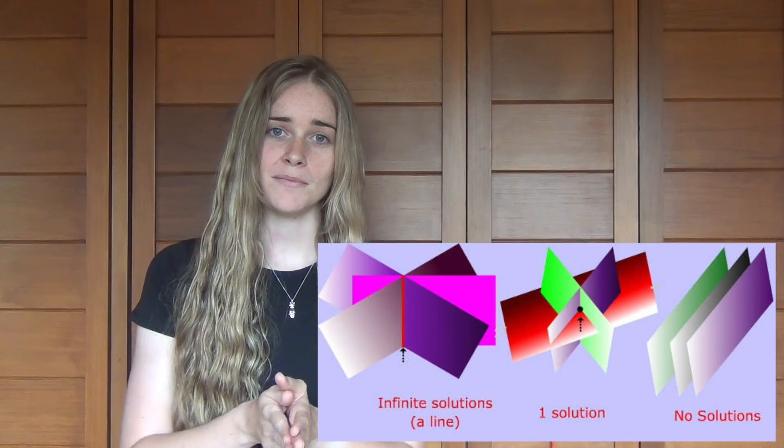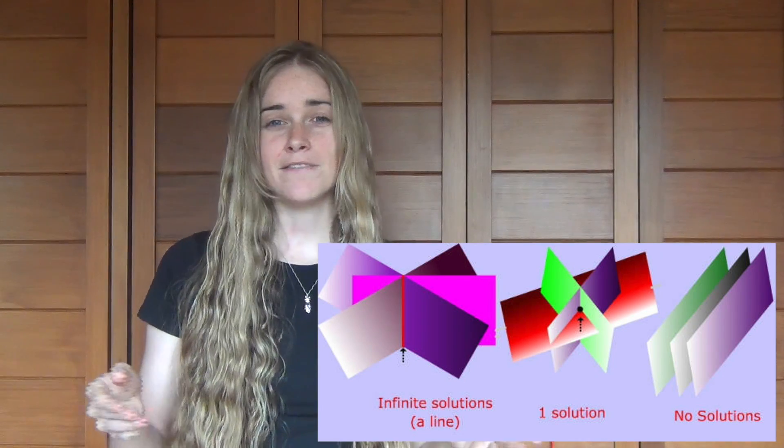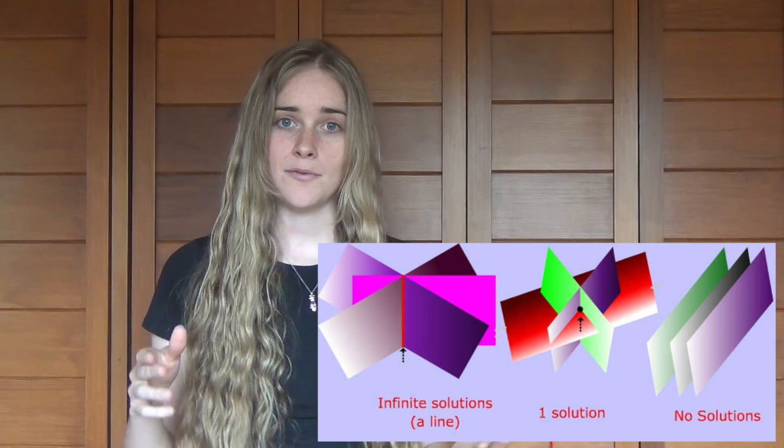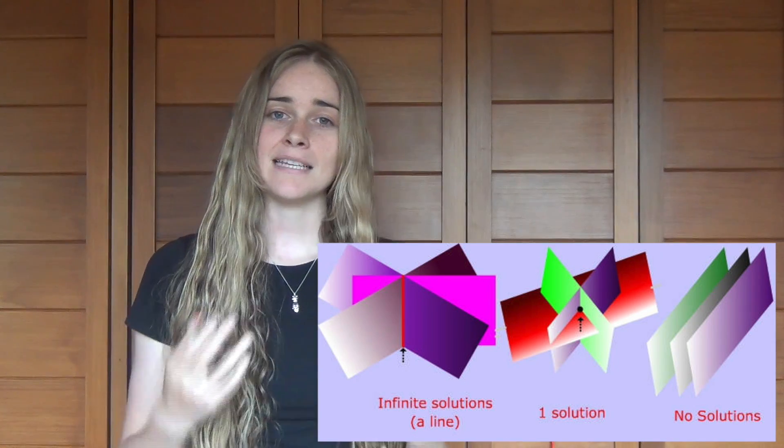Say for example, you have three equations representing three planes in 3D space. By looking at the matrix, you can find out if there will be no solutions to your problem — so these three planes will never intersect — or if there will be one solution, so they will intersect in one place, or if there will be infinitely many solutions. And that's pretty cool to be able to find out.